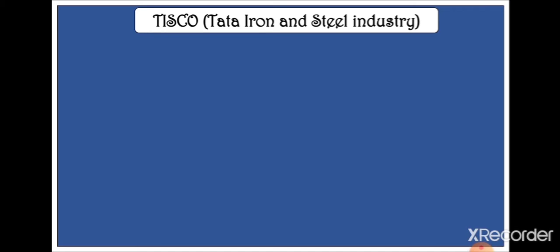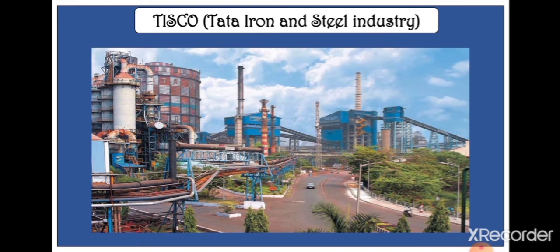I have already explained TISCO in the history part, but let us revise it once again from the geographical aspect. TISCO stands for Tata Iron and Steel Industry. This is the oldest and first iron and steel manufacturing industry of India, set up by Jamshedji Tata in 1907. This industry was set up during the colonial era in India, and at that time even the British government provided support to its establishment.